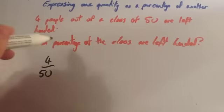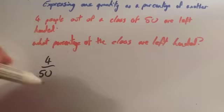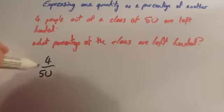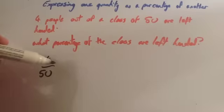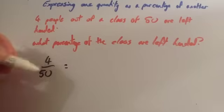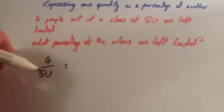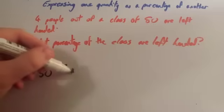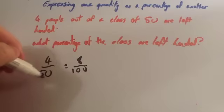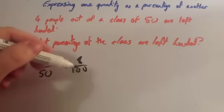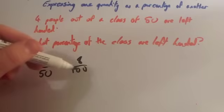Now I want to write it as a percentage. Percentages mean out of 100, so I want to make 100 on the bottom line. Remember from equivalent fractions, you can multiply both the top and the bottom by the same number and it'll be an equivalent fraction. So if I multiply them both by 2 — I'm choosing 2 because I want to make 100 on the bottom — 50 times 2 is 100, and 4 times 2 is 8. So four out of 50 is the same as 8 out of 100, or four-fiftieths is the same as eight-hundredths.